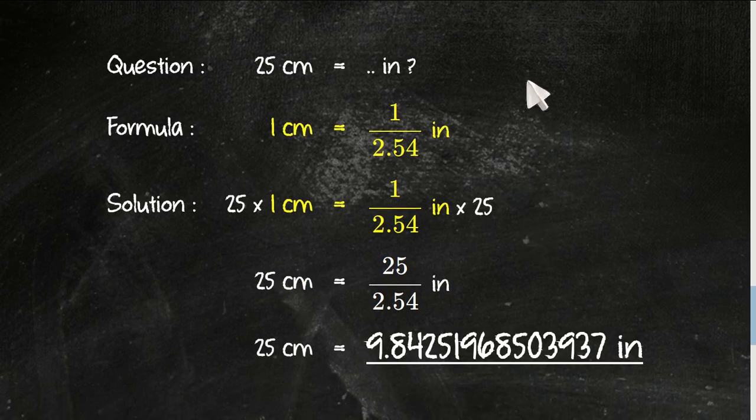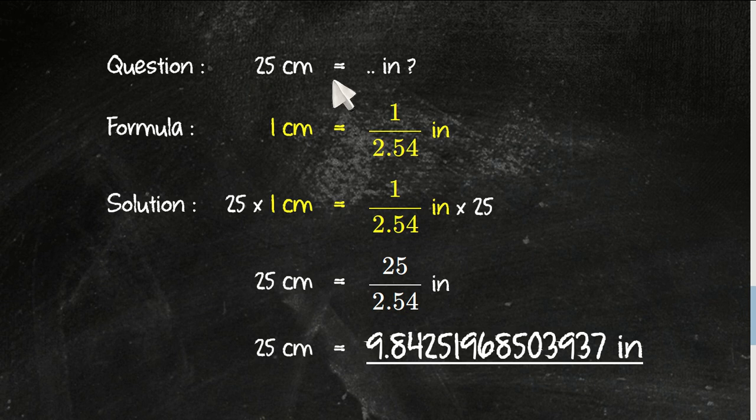And this is the answer section. First, just write again the question: 25 centimeters equals how many inches? And this is the formula: 1 centimeter equals 1 over 2.54 inches.